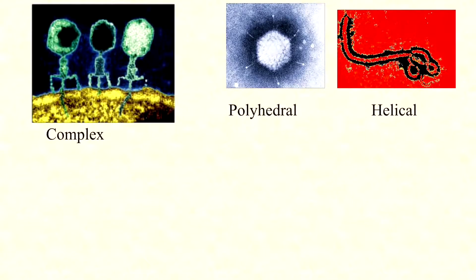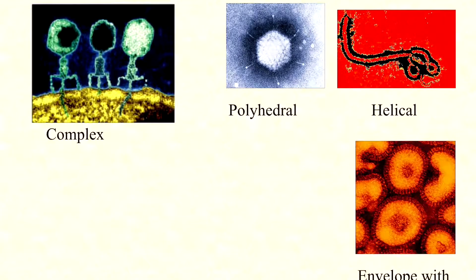Let's start with structural and symmetrical similarities and differences. Phage are almost all complex viruses, meaning they have some sort of polyhedral head and a helical tail structure with tail fibers that allow for attachment. Human viruses are more often going to be polyhedral or helical — polyhedra are more common than helices, though helices are not rare. Another physical difference is that human viruses have the potential to be enveloped with attachment spikes on the surface.